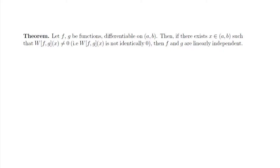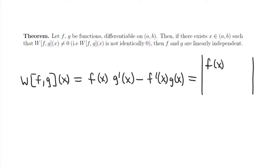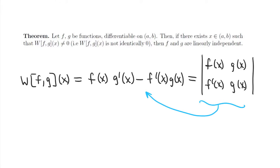First, recall what the Wronskian is. The Wronskian is an operation that takes in two functions f and g, and it's a function of x. It's equal to f(x) times g′(x) minus f′(x) times g(x). Typically we encapsulate this in a determinant with the functions in the first row and their derivatives in the second row. You can expand that determinant and get this same expression.